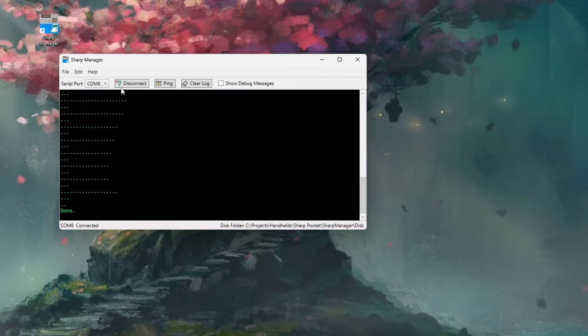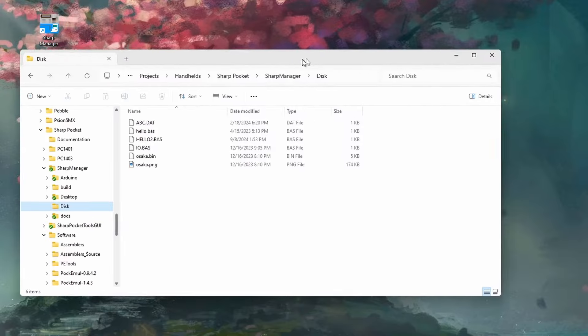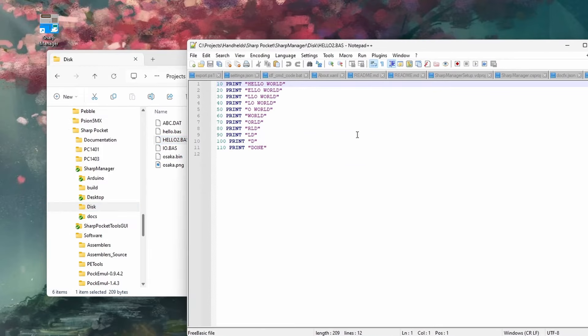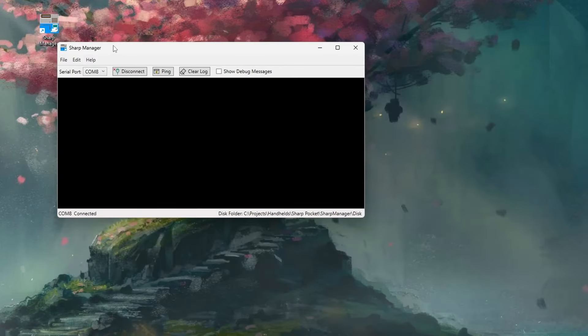And now on the computer, let's take a look at that file. So we go in here and we see we have hello two dot BAS. We can edit it and we can see that there's that extra line that we added and we can even look at the original hello BAS that was in there. That is Sharp Manager.